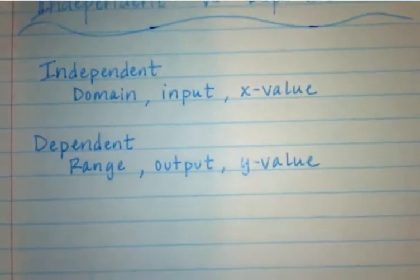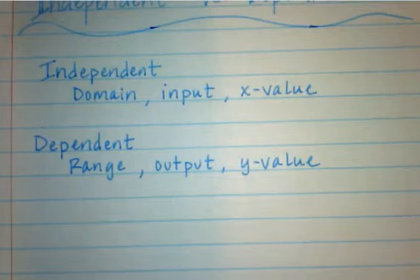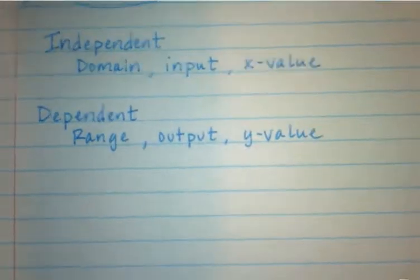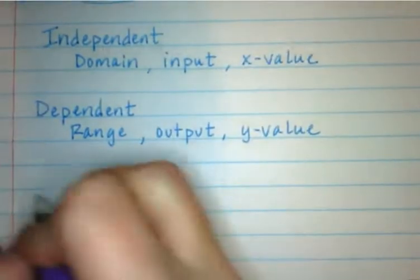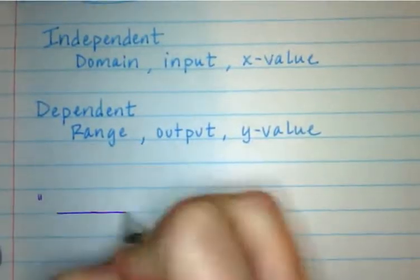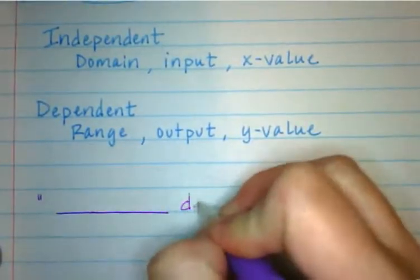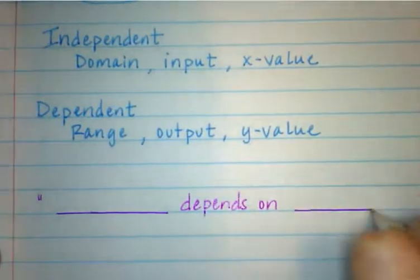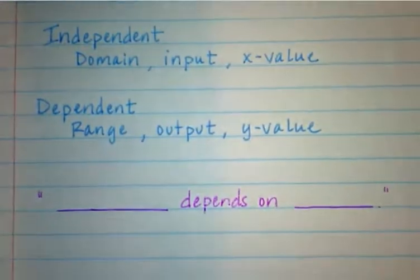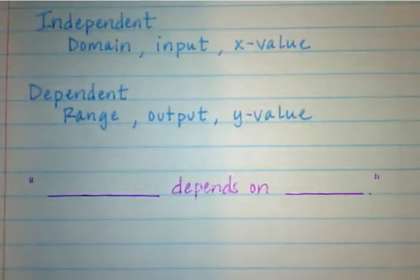So whenever you want to decide or determine if something is independent or dependent, you just need to ask yourself, and I would put this in sentence form. If you fill in the sentence, blank depends on blank, that will always get you in the right spot.